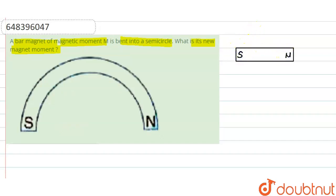the new magnetic moment of this semicircular shaped bar magnet. Its initial magnetic moment when it was a rectangular bar magnet was capital M. Now we calculate the new magnetic moment. Initially, when